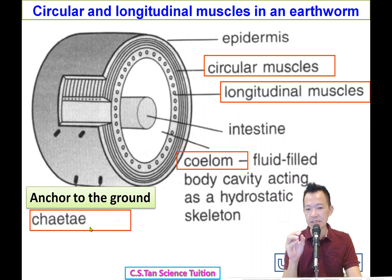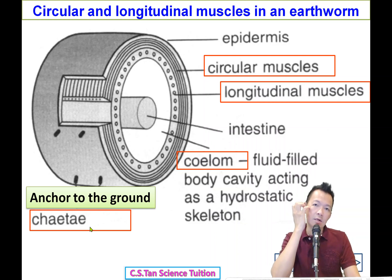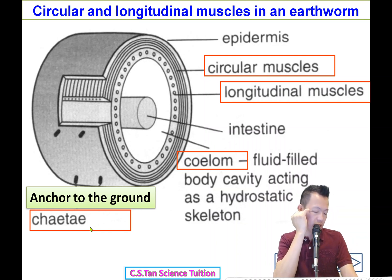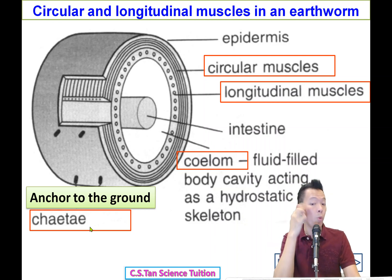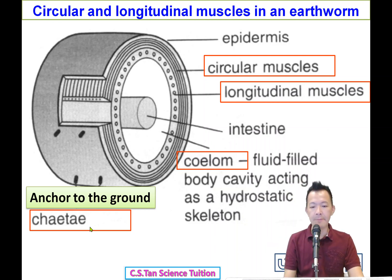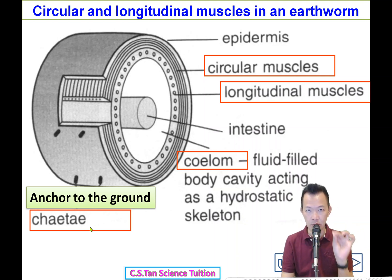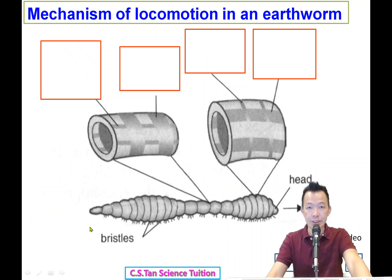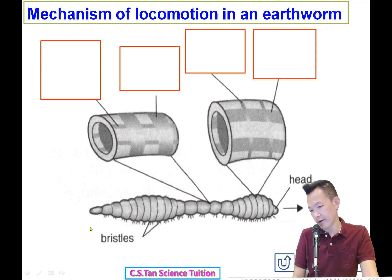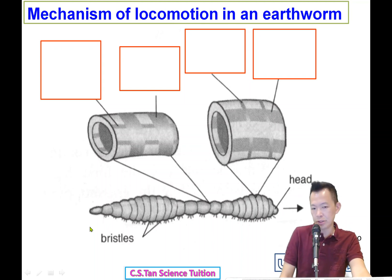The function of the setae is to anchor the earthworm to the ground — these small hairs hook onto the ground. Now, how does the earthworm move? This is actually a past-year trial question worth around 6 to 8 marks, so pay attention.